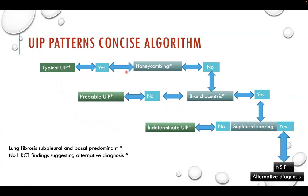This final algorithm summarizes: provided the lung fibrosis abnormality is subpleural and basal predominant with no HRCT findings suggesting alternative diagnosis — if honeycombing is present, it is typical UIP; if not, check bronchocentricity. If no bronchocentricity, probable UIP. If bronchocentricity is present, check for air trapping or subpleural sparing: if neither, indeterminate for UIP; if subpleural sparing, NSIP as alternative diagnosis; if air trapping, hypersensitivity pneumonitis. This concludes the flashcard. Thank you.